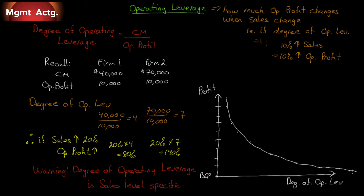It's not a linear relationship. We can't just calculate the degree of operating leverage once and say our company has an operating leverage of 4. At every level of sales, the degree of operating leverage will change. When profit is really high, operating leverage is low. When profit approaches the break-even point, operating leverage gets larger and larger. It is specific to the level of sales.